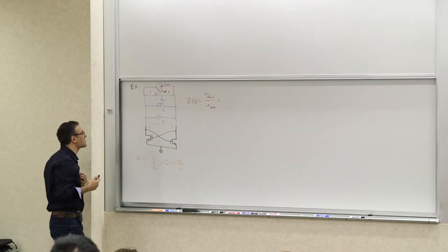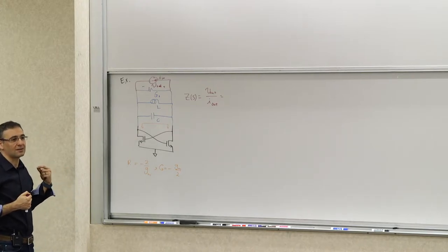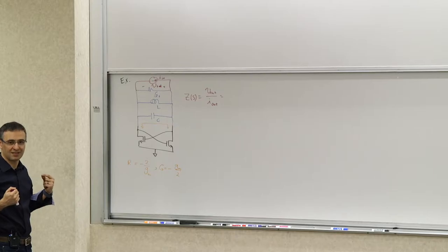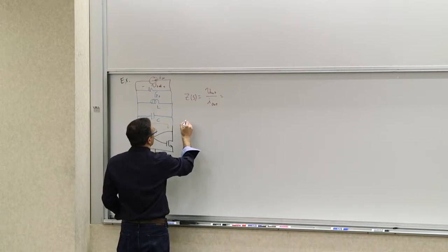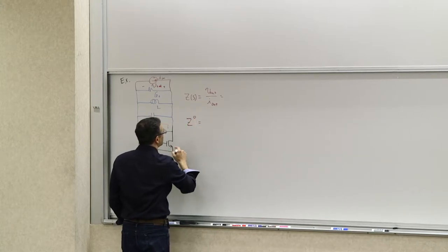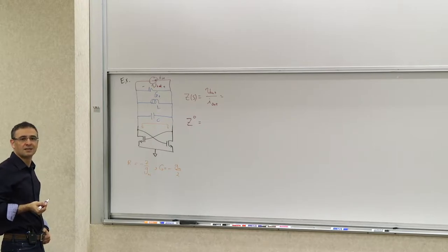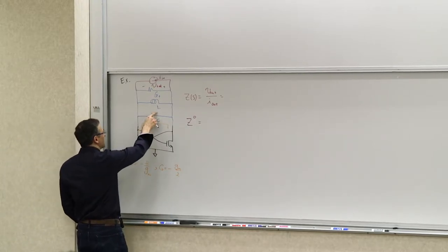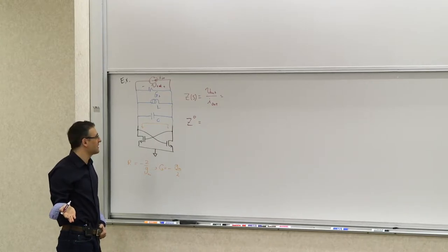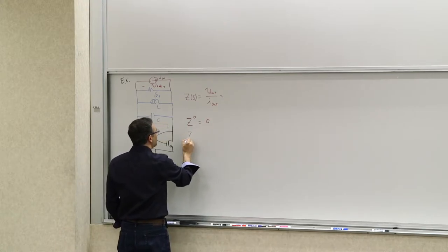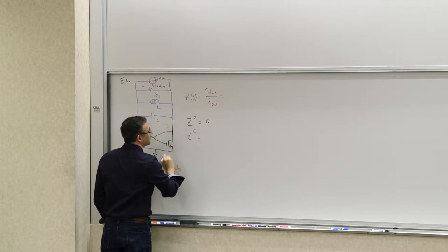Let's calculate this using time and transfer constants. The reason for this example is to show that TTC works for circuits that can in principle be unstable — it's not limited to stable circuits. Let's start with the transfer constants. Z_naught: when all elements are zero-valued, the capacitor is open and the inductor is a short, so you're driving a current into a short. The voltage is zero, so Z_naught equals zero. Z_C is also zero because C being infinite value shorts both elements.